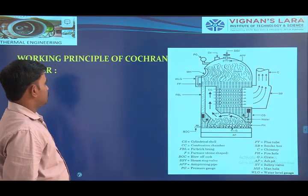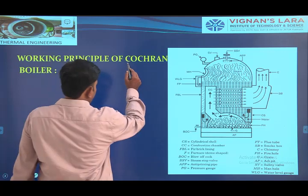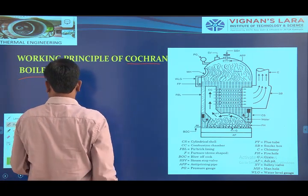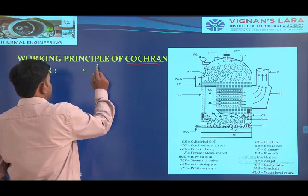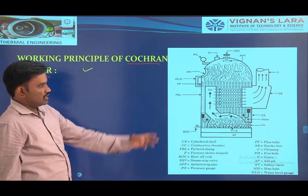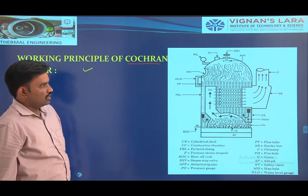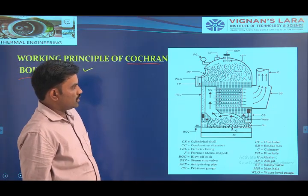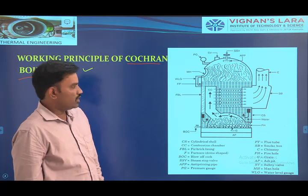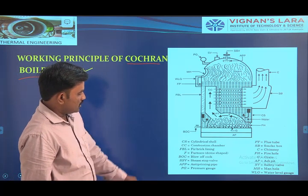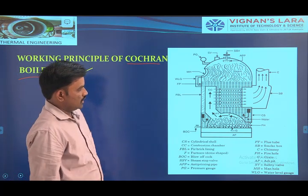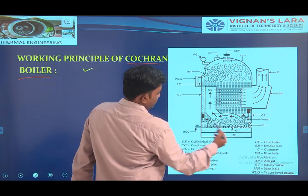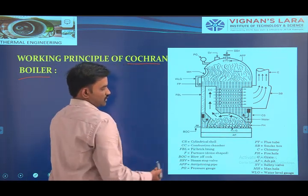See the next type of boiler — the Cochrane boiler. In this diagram I have mentioned clearly the different parts of the Cochrane boiler. See the cylindrical shell — CS is the cylindrical shell. And this is the combustion chamber. Inside the combustion chamber, we are generating the gases, and the gases are flowing through the tubes.